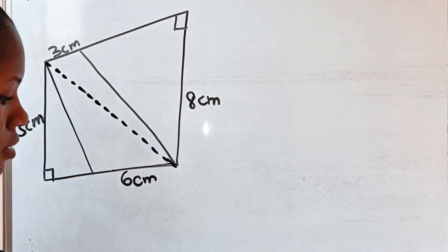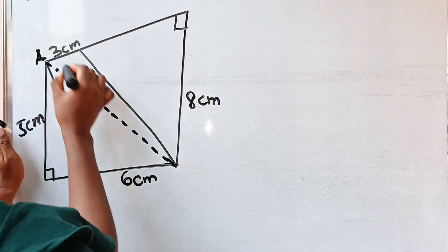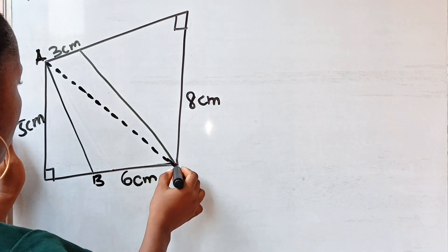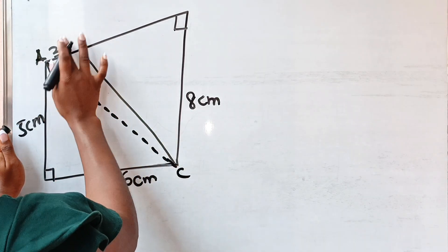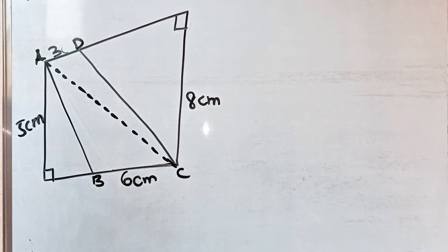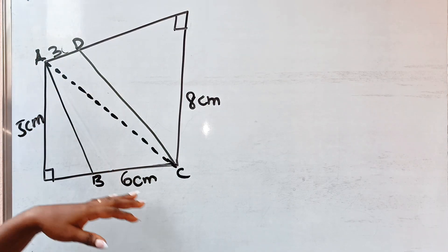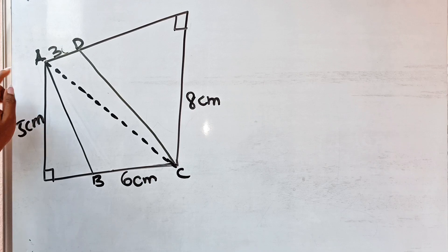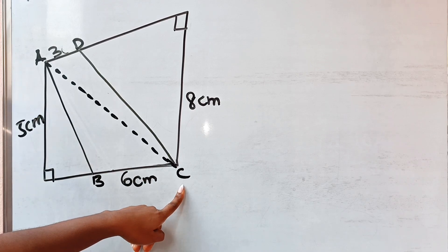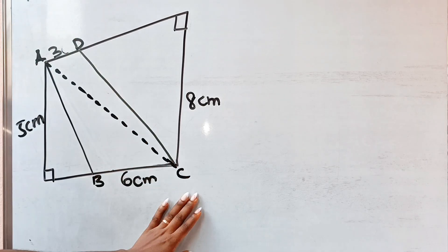All right, now let's call this A, B, C, D. So the area of this portion will be equal to the area of triangle ABC plus the area of triangle ADC.